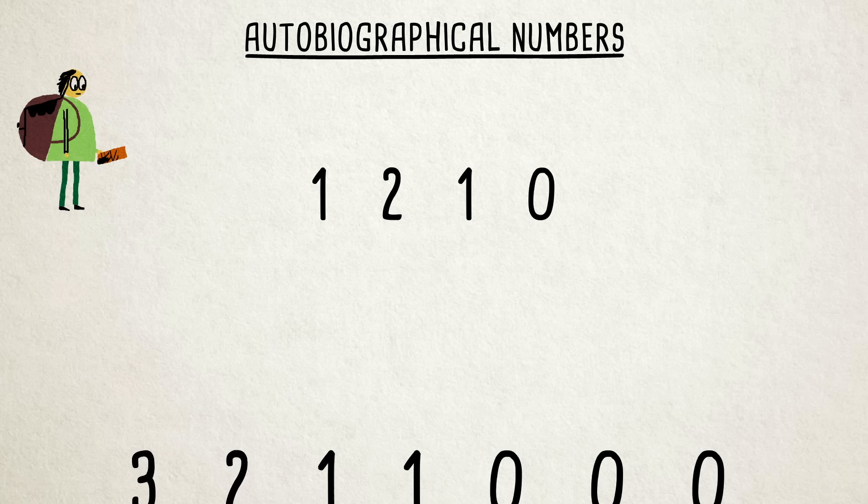There's something those first two numbers have in common. They're what's called autobiographical numbers. This is a special type of number whose structure describes itself.